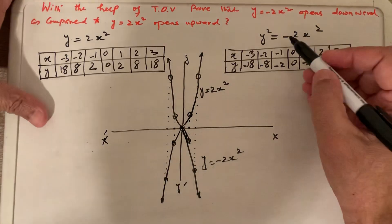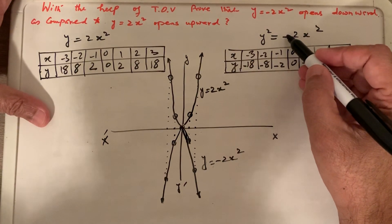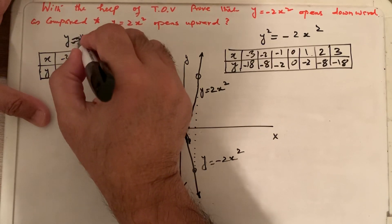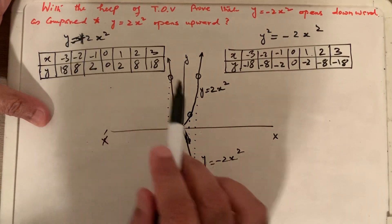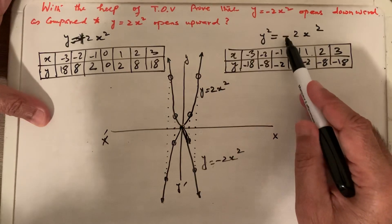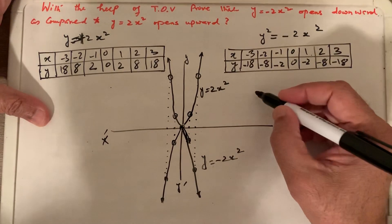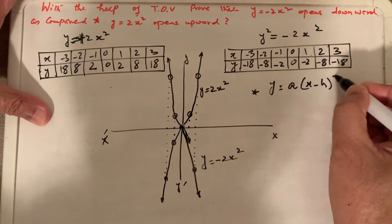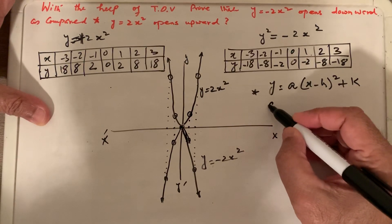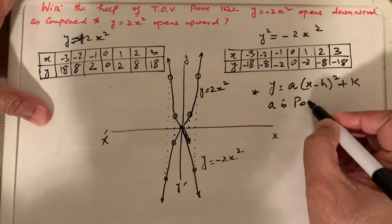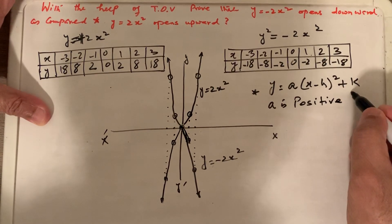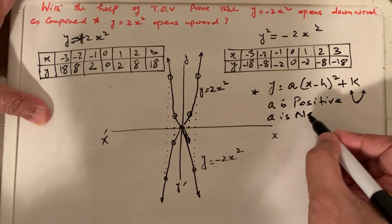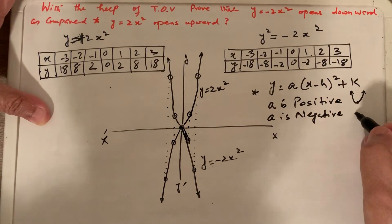We learn from the table of values that the minus sign determines which way the parabola opens. A plus sign means the parabola opens upward; a minus sign means it opens downward. The general vertex form is y equals a times (x minus h) squared plus k. The rule is: if a is positive, the parabola opens upward. If a is negative, the parabola opens downward.